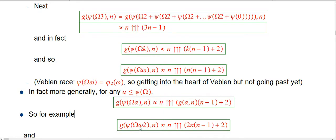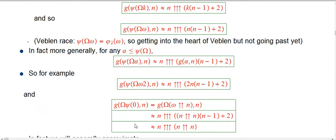So if you just want an example of that, if you have g of psi of big omega times omega doubled, omega 2, then, well, we know what g of omega 2 is, it's just 2n. And so we've got an n triple up, something on the order of 2n squared now. So that's nice in general, but of course we want to go beyond as usual.